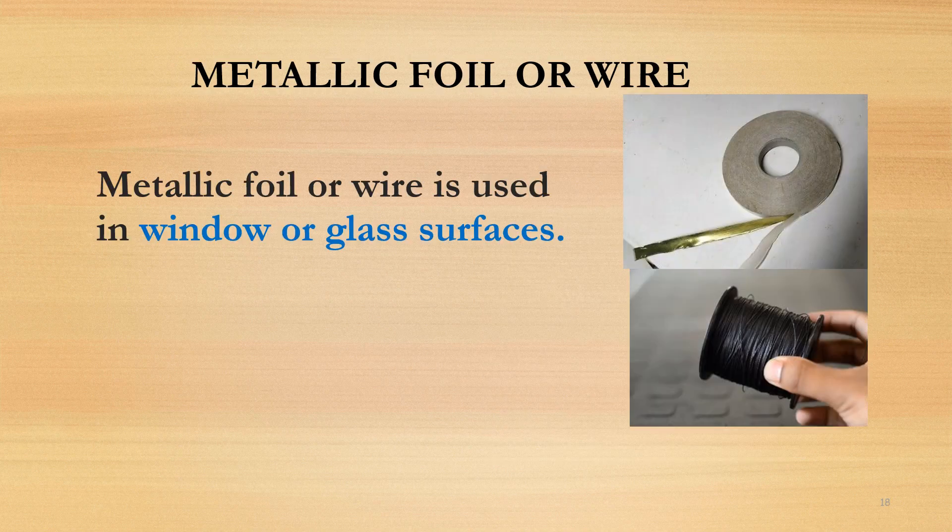Metallic foil or wire — in buildings or compounds, all points of entry can be wired by using electrical charge strips or tinfoil wire. Any action that will move the foil or wire will break the circuit and activate an alarm. The metallic foil or wire is used on windows or glass surfaces.